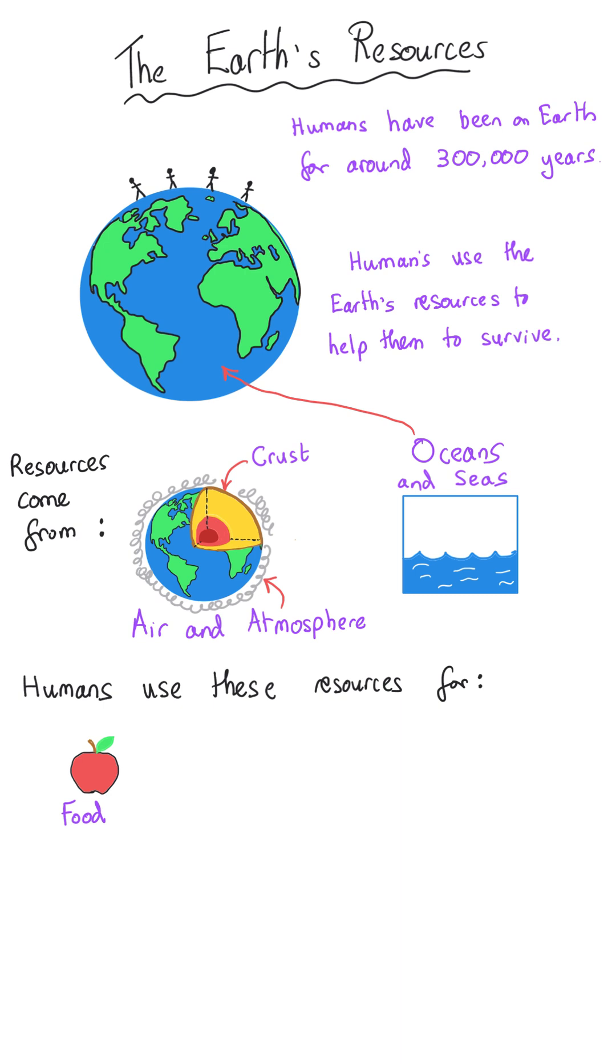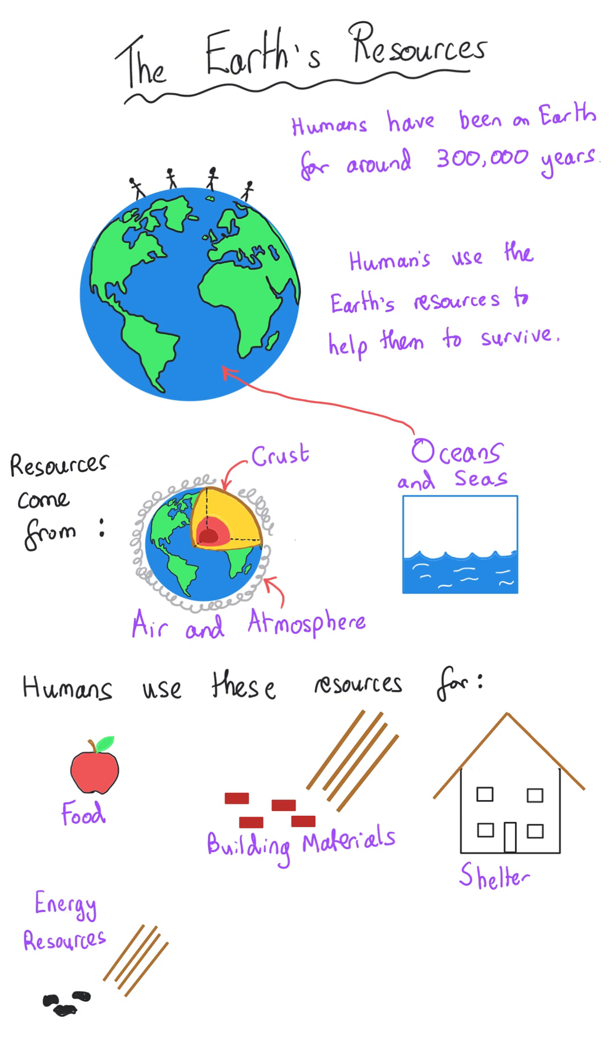Humans use these resources for a variety of different things, for instance food and also building materials to provide shelter. Additionally humans use energy resources to provide warmth and also transport.